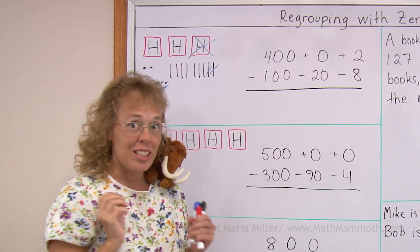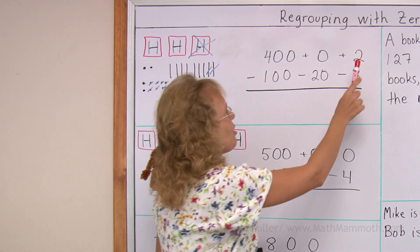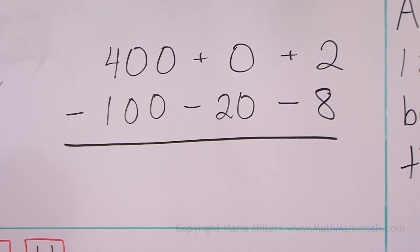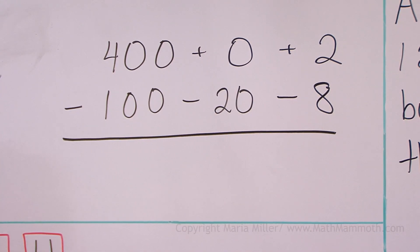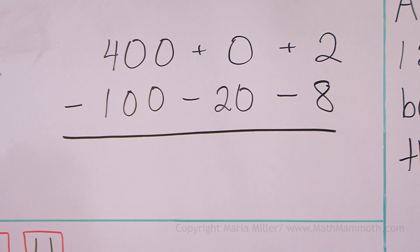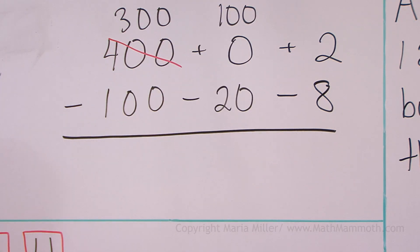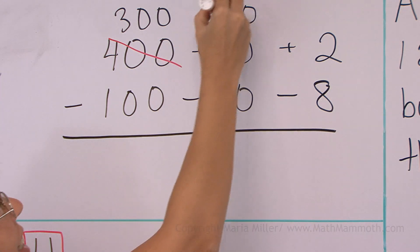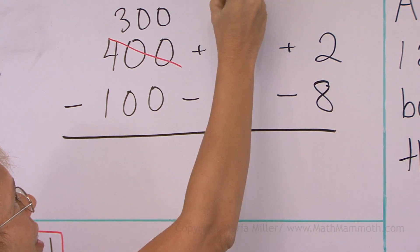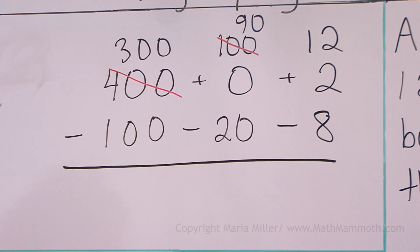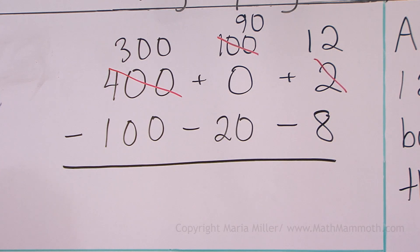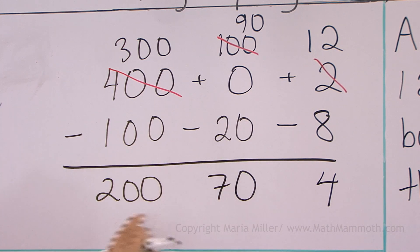Now let's do it using this, the same problem. I cannot subtract 2 minus 8. Normally I would take a 10 from here, but there are none. So I need to go over here to the hundreds and take one of those hundreds. So that leaves here 300. And that hundred moves here to the tens column. And then I take one 10 from it, leaving 90 here and move the 10 here. And the 10 and 2 together make 12. So there was a lot happening. Now I can subtract 12 minus 8, 90 minus 20, and 300 minus 100. So the answer is 274.